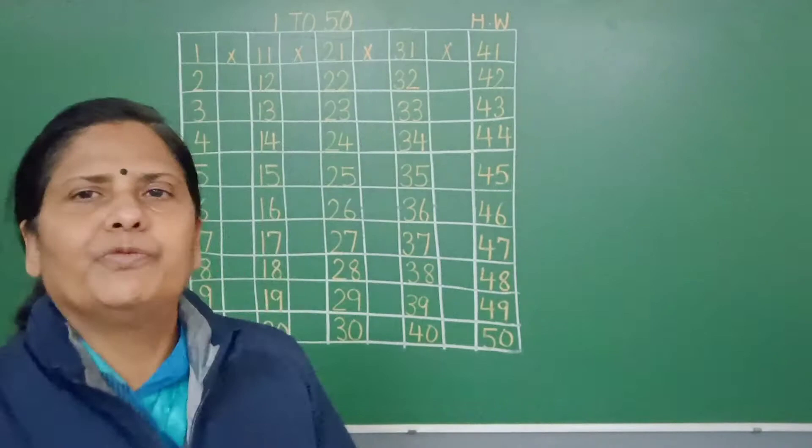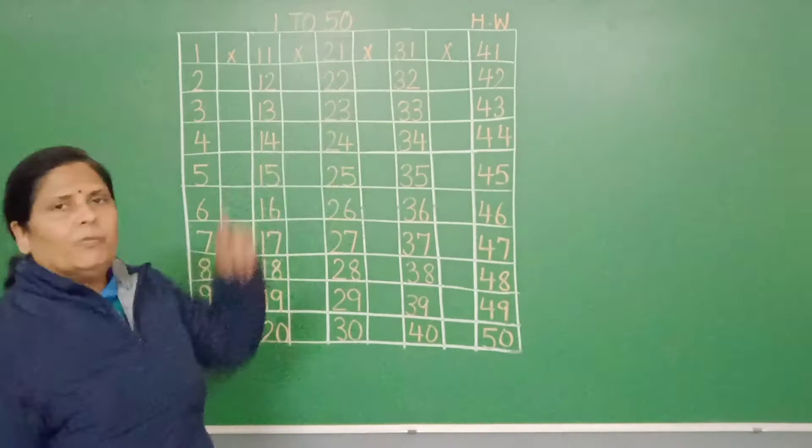So children look at the board. We will read the numbers from 1 to 50 in a sequence. 1 to 50 homework.